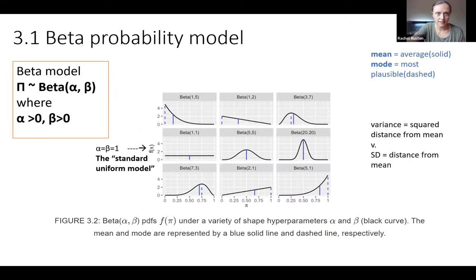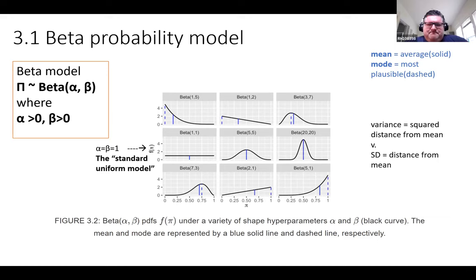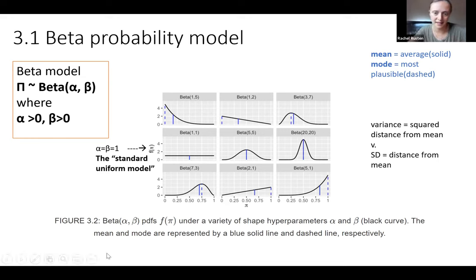Working on with the beta probability model — starting with the orange box there. Pi showed up a little weird, but our prior is this beta model, which is a function of alpha and beta. Both alpha and beta have to be greater than zero. This chart I pulled straight from the text gives us a really great idea of what things look like.